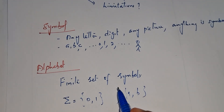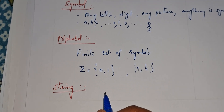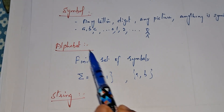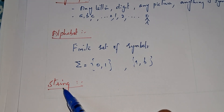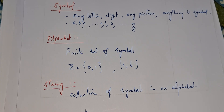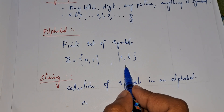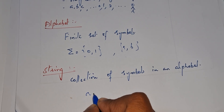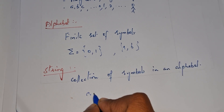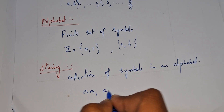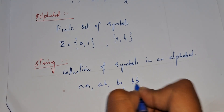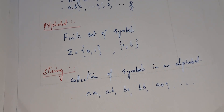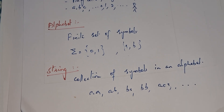Then what is a string? A string is a collection of symbols in an alphabet. A collection of symbols in an alphabet is known as a string. For example, suppose we are taking the alphabet {A, B}. By using A and B, we can generate different strings: A, AA, AB, BA, BB, AAA, etc. So a collection of symbols in an alphabet is known as a string.